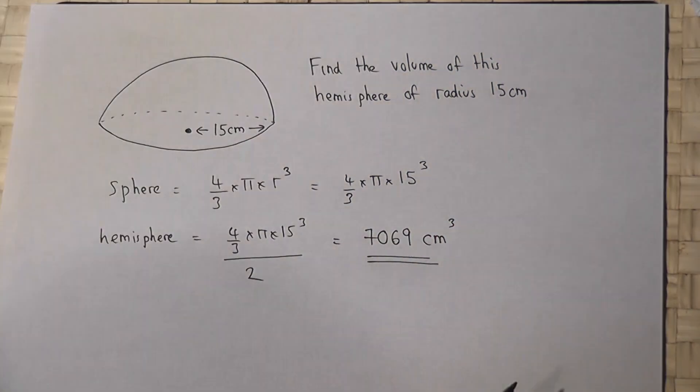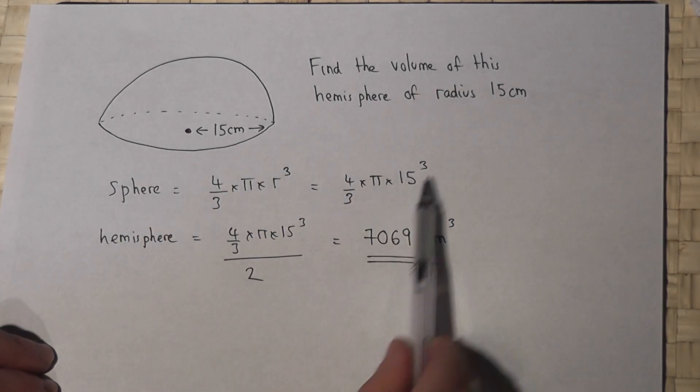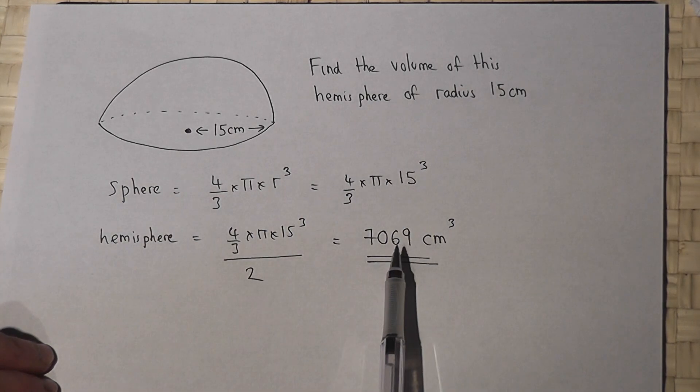And there we go. To find the volume of a hemisphere we do the whole sphere and then halve it for the hemisphere.